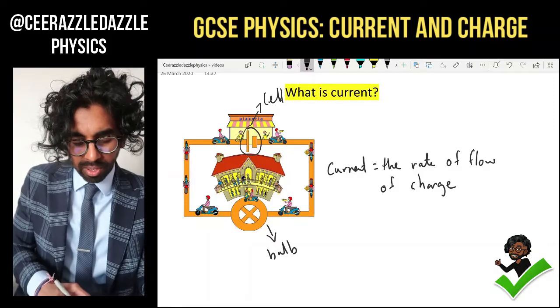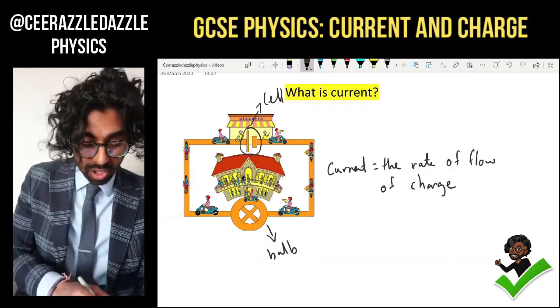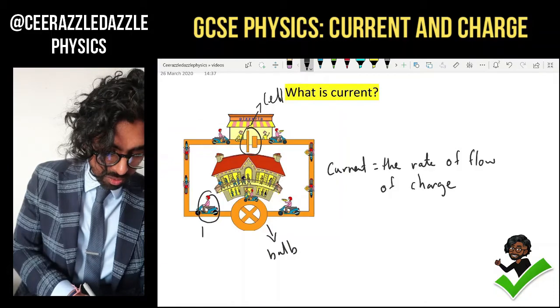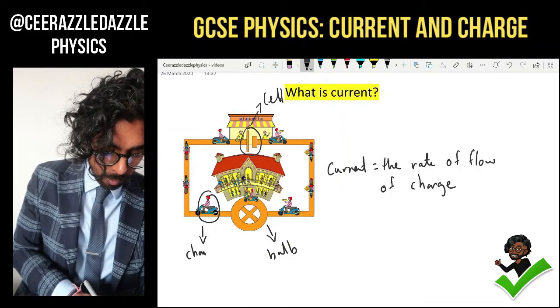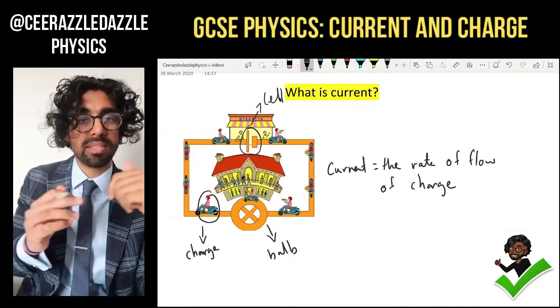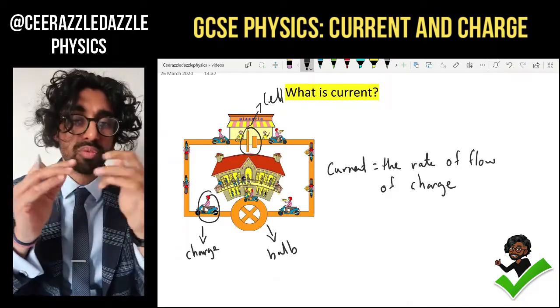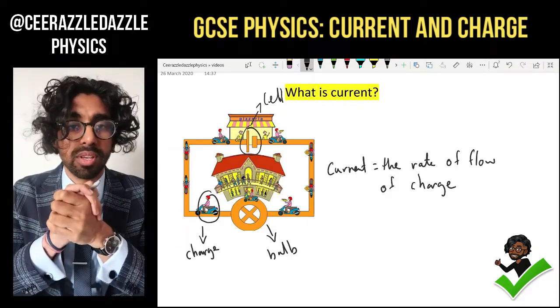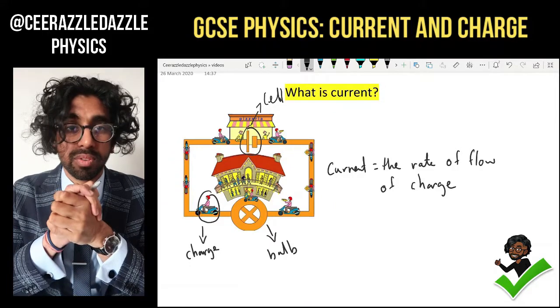So we have a cell here, we have a bulb here. The charges are going to be these guys here. So these guys represent the charge. So how fast they're going around our circuit, that's basically what current is. So the rate at which the charge is flowing around your circuit is going to be the current.